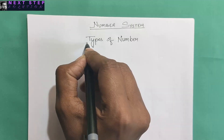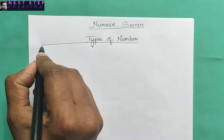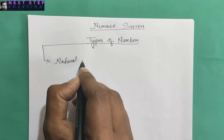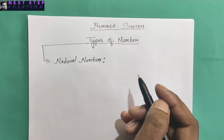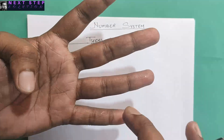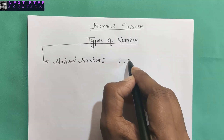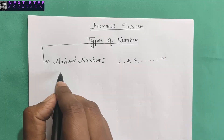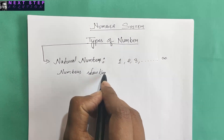Today we are going to do number systems. Before starting with the practical, let me give you a quick review of the different types of numbers we are going to learn in this chapter. The first is natural numbers. The numbers which we use for counting are called natural numbers. We start counting with one, two, three, four — not zero. So natural numbers start from one and go on till infinity.